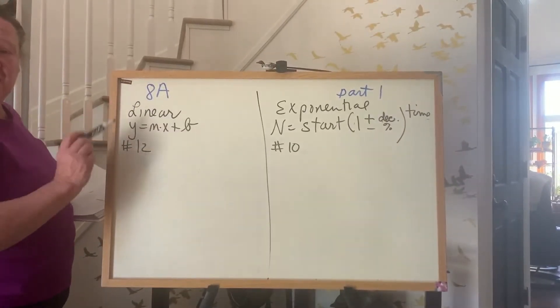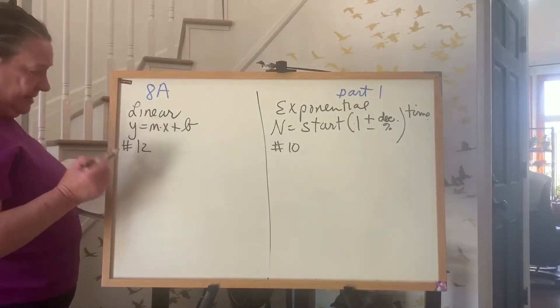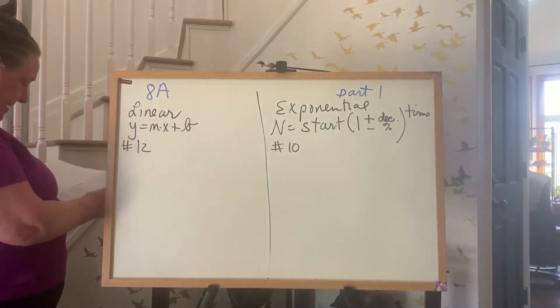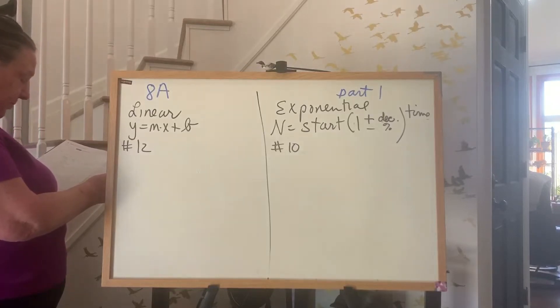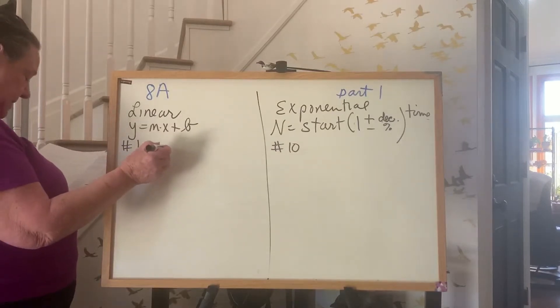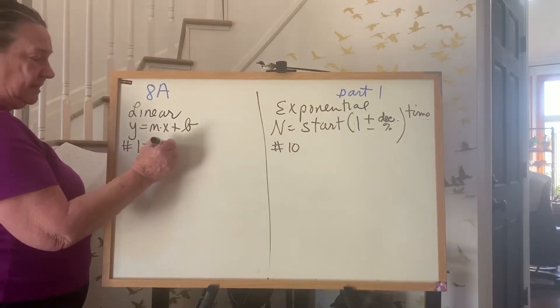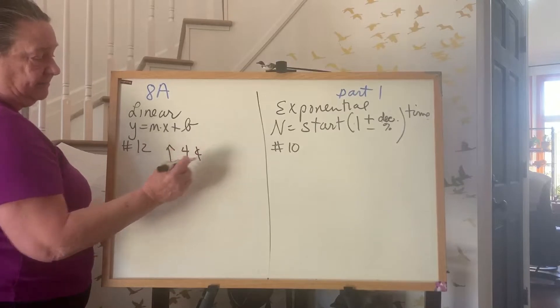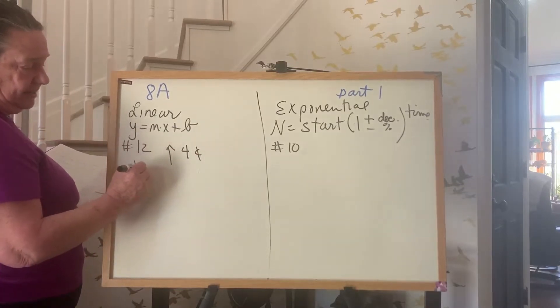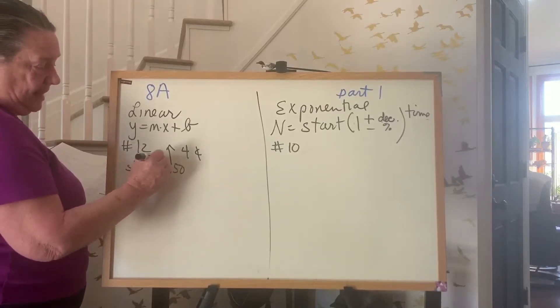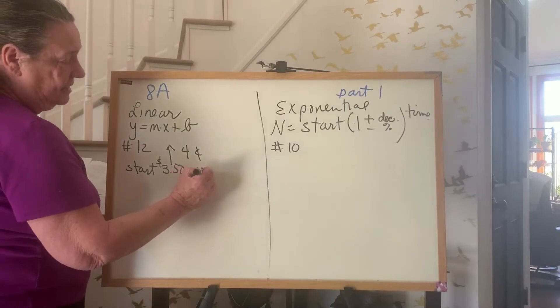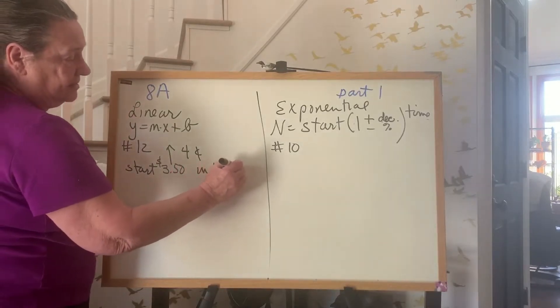For an example of linear, this is the really easy one. This is your number 12. It says, the price of a gallon of gasoline is increasing by 4 cents per week. If the price is $3.50 per gallon today, what will it be in 10 weeks? In this one, it is increasing by 4 cents. It's starting at $3.50. And you want to know the price in 10 weeks.